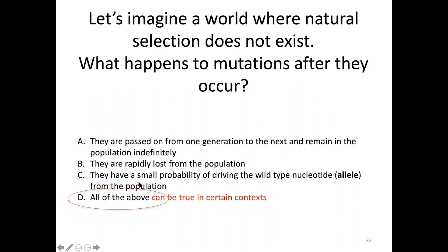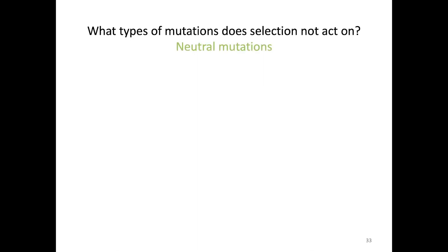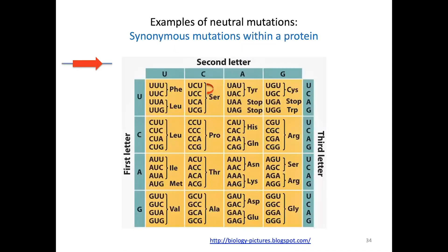The other option — with a very small probability we'll go over later — is that the new allele could actually randomly rise in frequency in the population until it fixes, supplanting the old allele, producing an evolutionary change. What types of mutations don't experience natural selection? These are called neutral mutations — they're neutral with respect to their fitness benefit or loss, neutral with respect to natural selection. Probably the majority of mutations in the genome are actually neutral mutations that don't affect the phenotype of an organism, so natural selection can't see them or act on them.